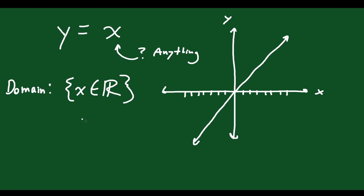Therefore, when we talk about the domain, you can write it a couple of ways. You can say that x exists in the set of real numbers with no restrictions, meaning x can be anything. Or you could write it as the domain ranging from negative infinity up to positive infinity. This interval represents where your graph exists — from an x value of negative infinity, very far to the left, all the way to positive infinity, very far to the right.